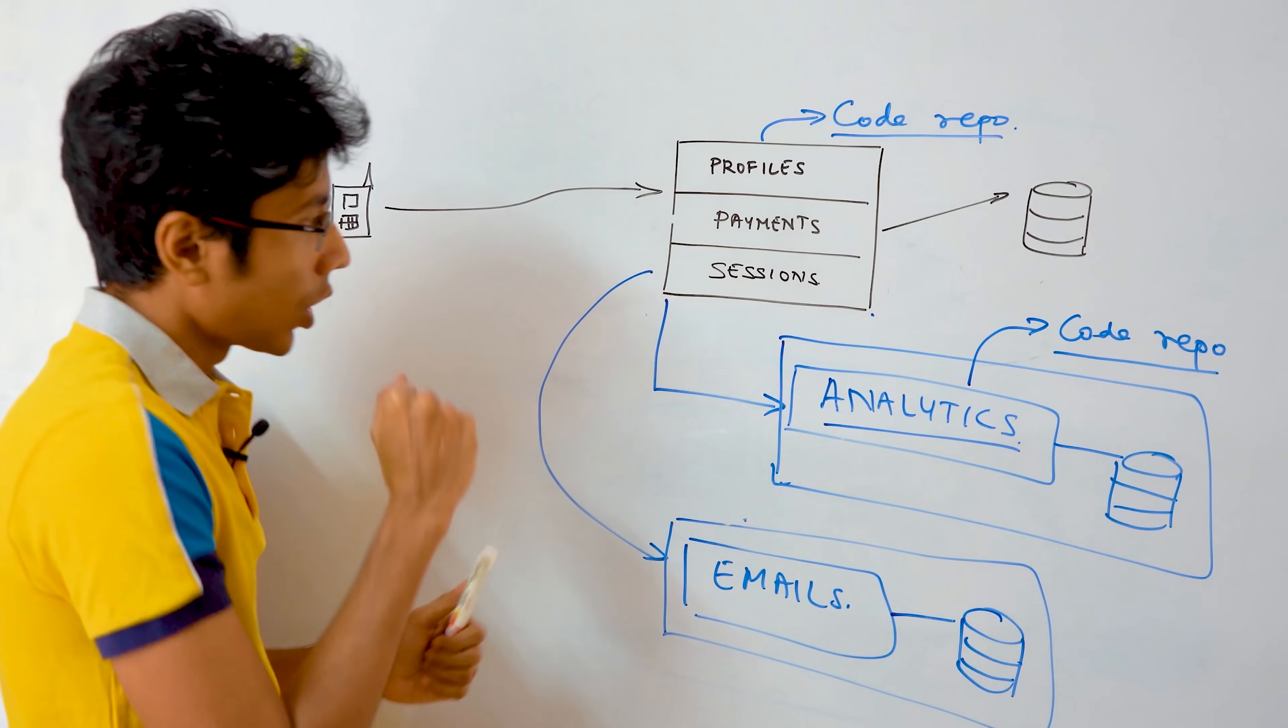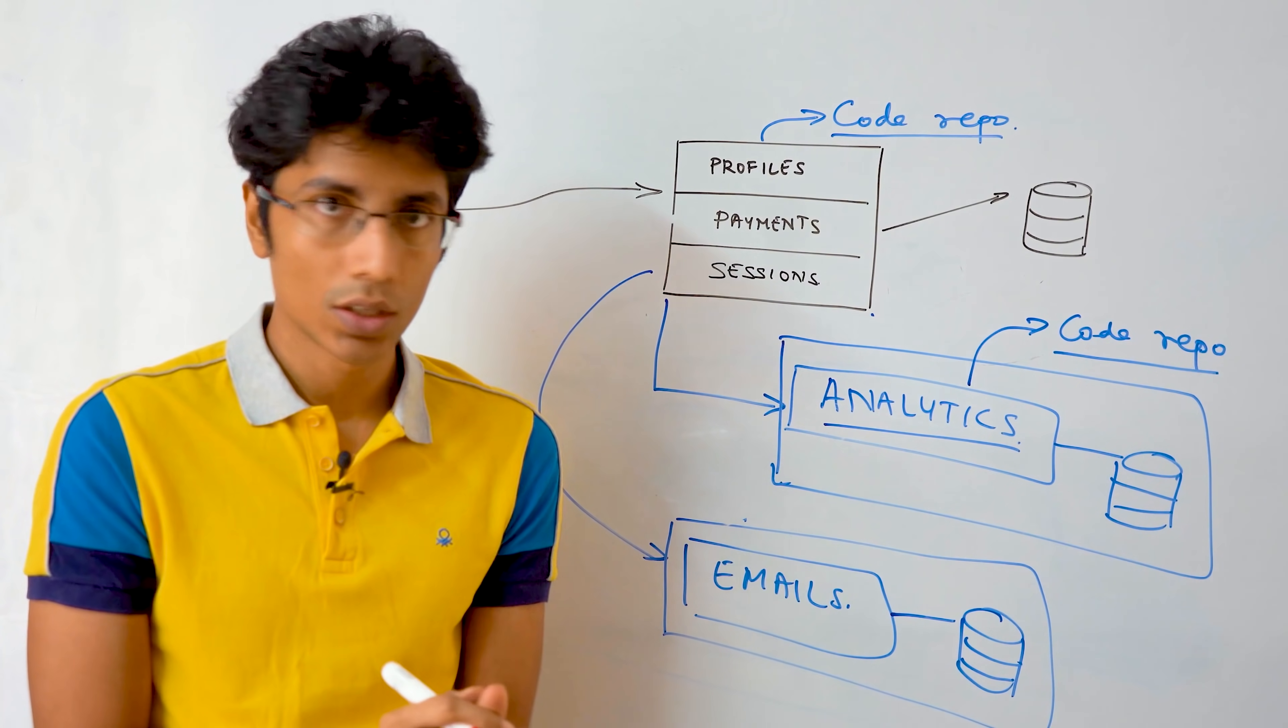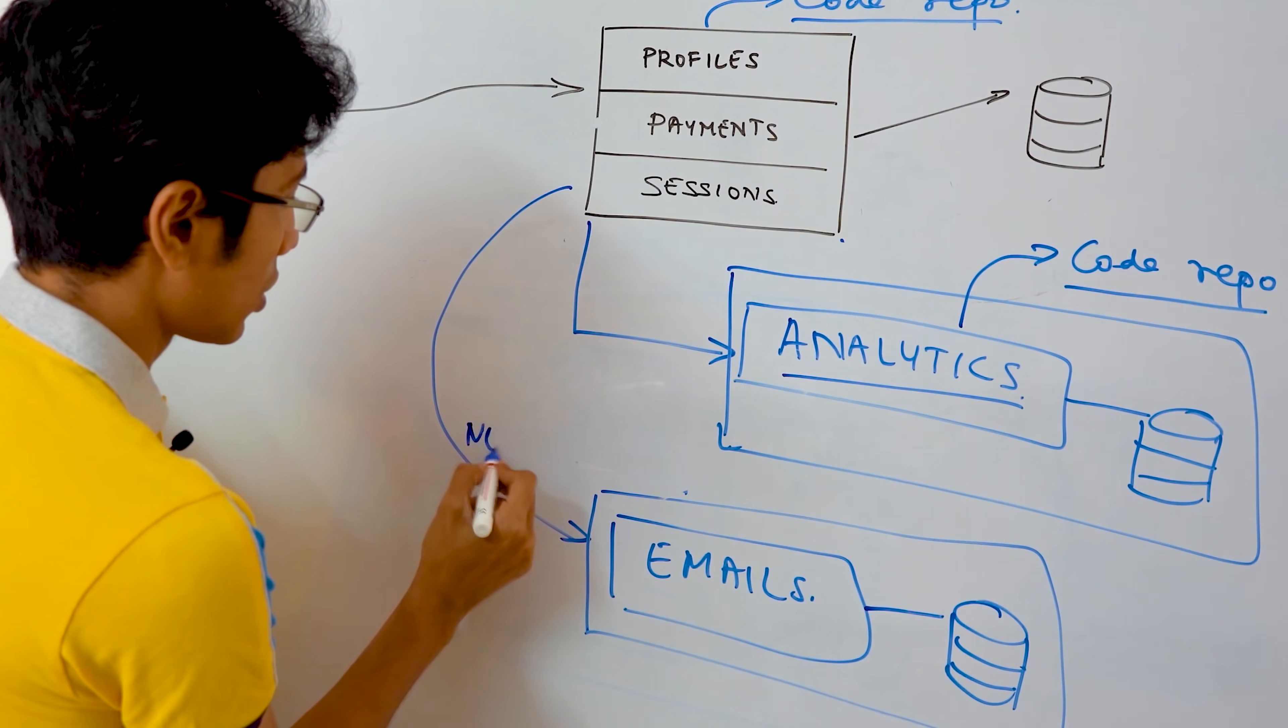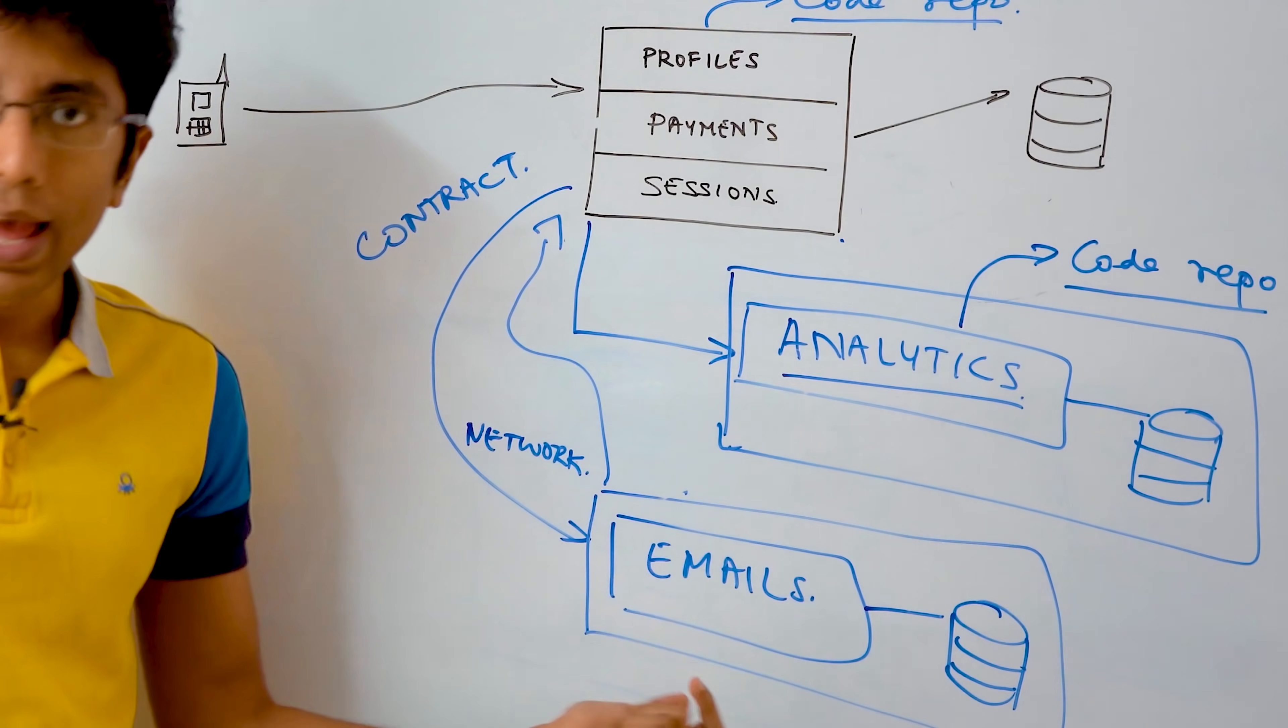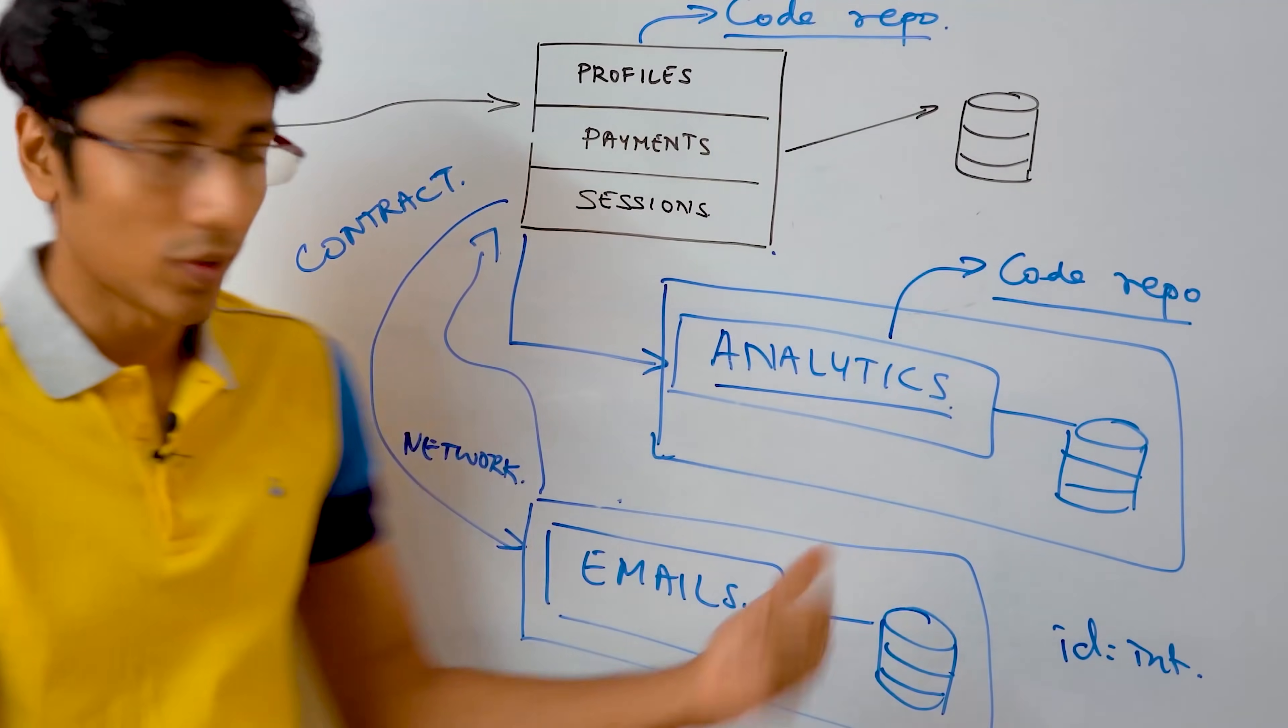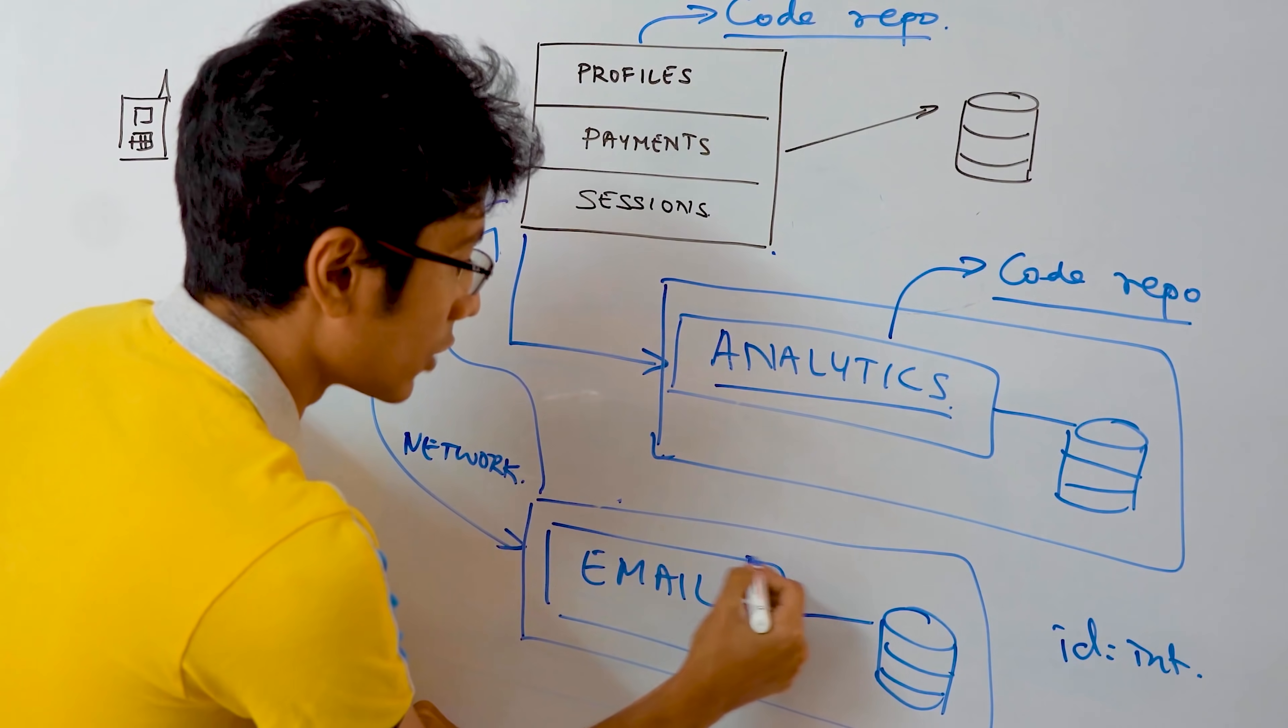And what are those changes? Well, firstly, you need to be able to define how are you going to communicate to these services. So the email service is going to be taking your network calls, but it needs to give you a contract that for the profiles that I have, I have the ID as an integer or as a string or whatever, but this contract has to be maintained by the email service.